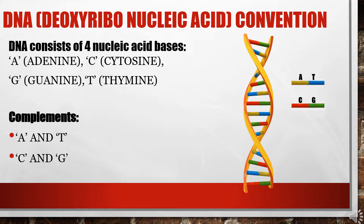DNA stands for deoxyribonucleic acid. It is a hereditary material in humans and many other organisms, and it carries information from generation to generation. DNA consists of four nucleic acid bases: A (Adenine), C (Cytosine), G (Guanine), and T (Thiamine). The complement acid bases are A and T, and C and G. As you can see from the diagram, A and T are paired together and C and G are paired together. We'll stick to the information required for DNA-based cryptography.